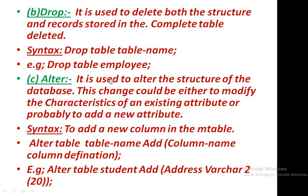The ALTER command is used to alter the structure of the database. This change could either modify the characteristics of an existing attribute or add a new attribute. To add a new column: ALTER TABLE table_name ADD column_name column_definition. For example: ALTER TABLE student ADD address varchar(20) — the address column will be added to the existing table.